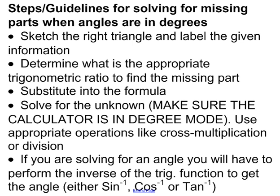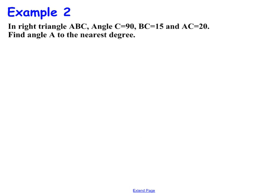Let's try another example. Example 2. So in example 2, we're going to look for an angle. So example 1, we looked for a missing side. Here we're going to look for a missing angle. So example 2 says, in right triangle ABC, angle C equals 90, BC equals 15, and AC equals 20. Find angle A to the nearest degree.